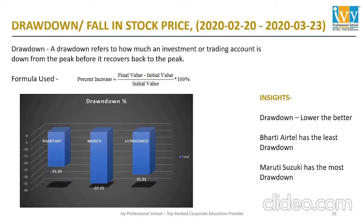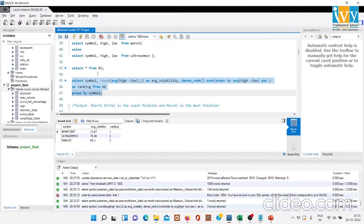The next parameter is drawdown — the fall in percentage of the stock price. The timeframe considered is from 20th February 2020 till 23rd March 2020, which is the COVID period when the markets fell. Drawdown is the fall in stock price, and the formula used is: (final minus initial value) divided by initial value, multiplied by 100. Let me show you the code for the same.